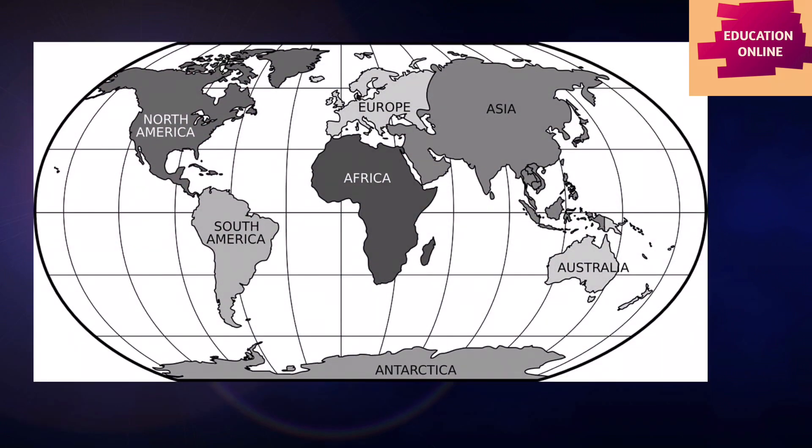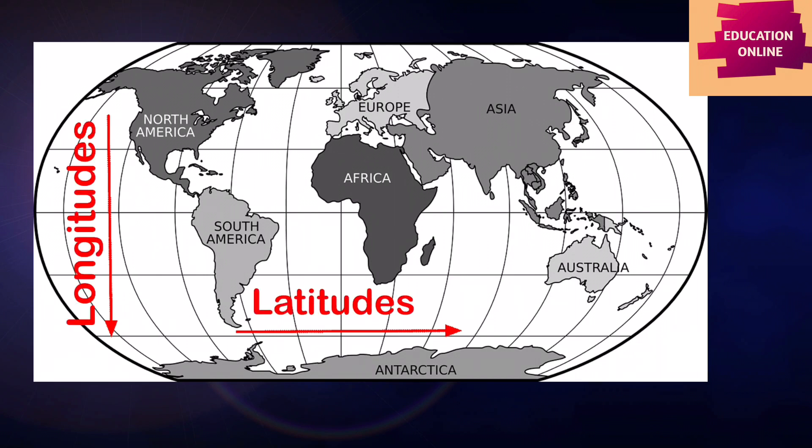When we look at the globe or a map carefully, we can see horizontal and vertical lines on it. These lines are not actually drawn on the earth's surface; they are imaginary lines drawn on the globe or a map. These imaginary horizontal lines are called latitudes and the vertical lines are called longitudes.